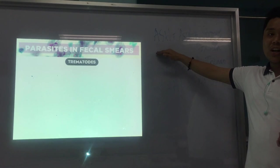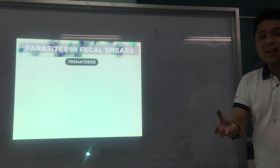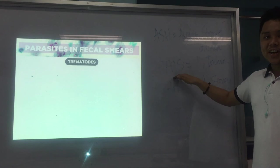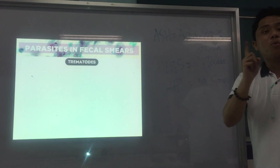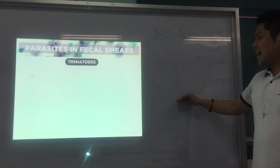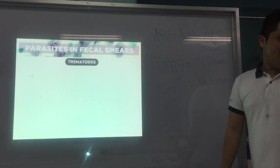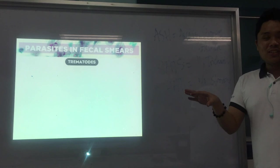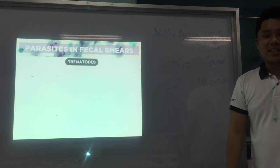The soil-transmitted helminths (STH) are remembered with the mnemonic HATS — Hookworm, Ascaris, Trichuris, and Strongyloides — helminths acquired from soil infected with feces containing eggs. The 'unholy three' or parasitic triad — remembered as HAT (Hookworm, Ascaris, Trichuris) — are the three eggs that can be recovered in one stool specimen. Next, we continue with trematodes (flukes) and then cestodes (tapeworms) in the next videos.